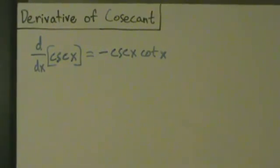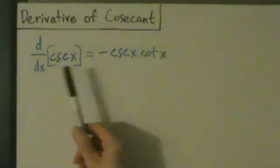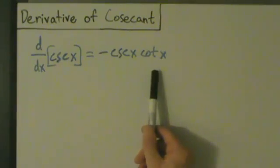Okay, so in this video, we're going to do the derivative of the cosecant function. So here, d/dx of cosecant of x equals negative cosecant x cotangent x.